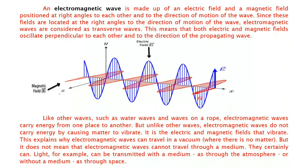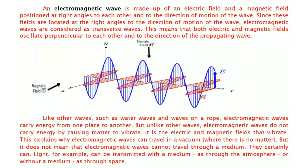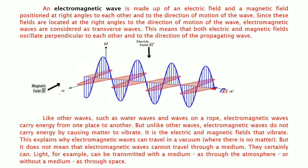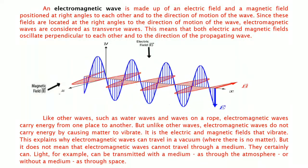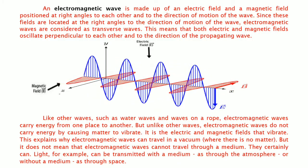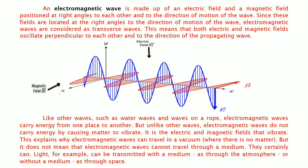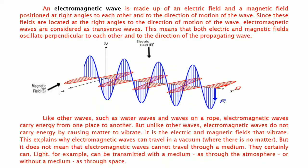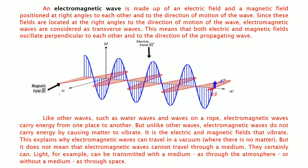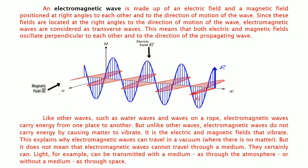An electromagnetic wave is made up of an electric field and a magnetic field positioned at right angles to each other and to the direction of motion of the wave. As you can see here in the animation, the electric field is the blue colored wave, while the magnetic field is the red one. They are positioned at right angles, meaning they are positioned at 90 degrees to each other.